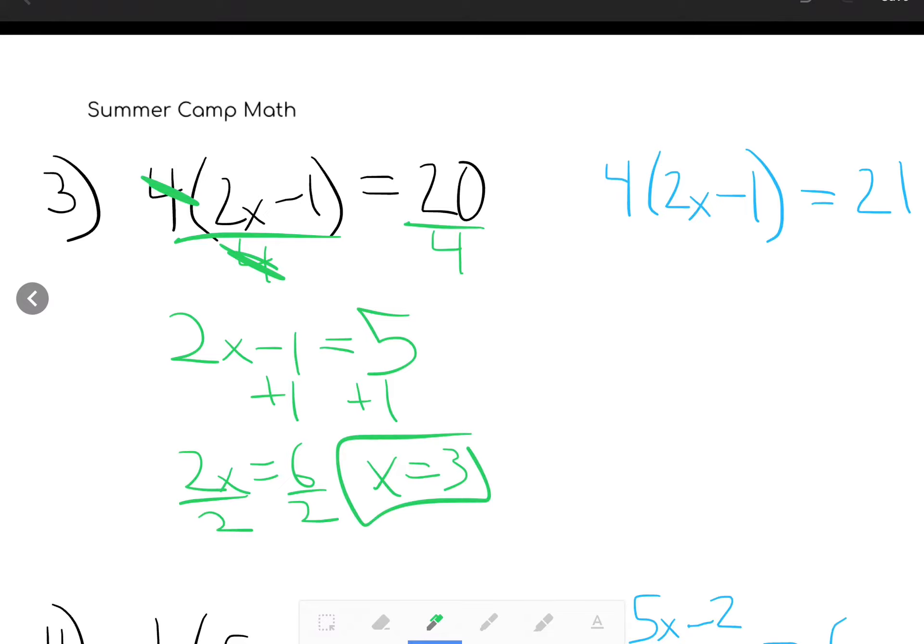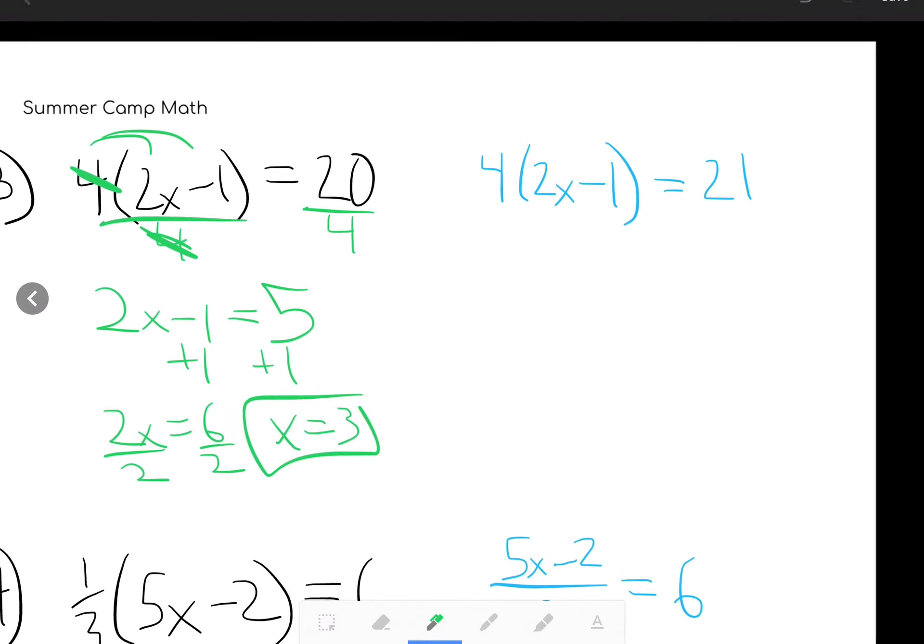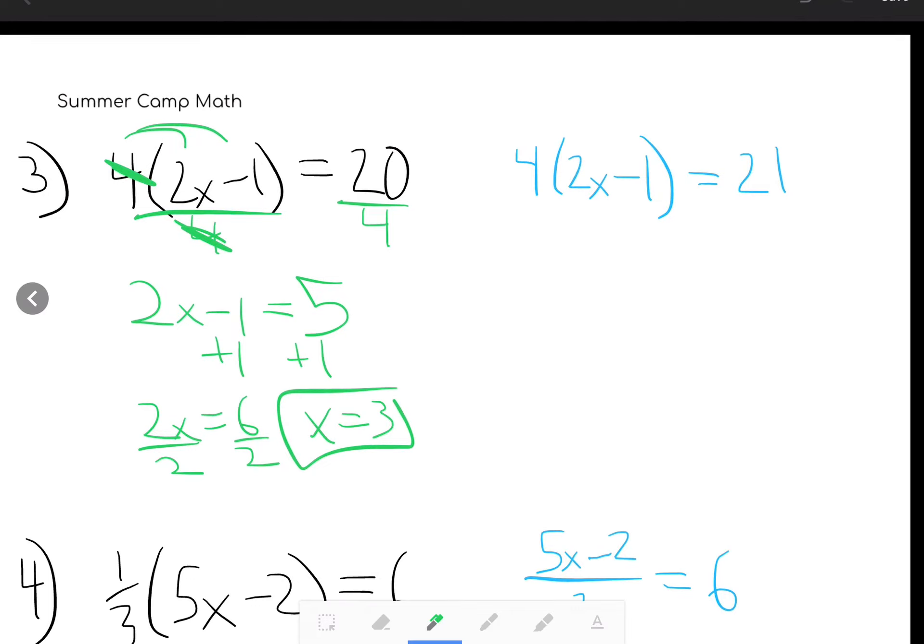Now if you went the longer way, or you distributed, you'd get the exact same answer. It's just that the numbers would be bigger when you're doing your division and addition and subtraction. Totally fine though. Now to contrast that, let's take a look at this problem. Here, I can't really divide by 4 because 21 isn't a nice multiple of 4. So when this is the case, we have to bite the bullet and we just have to distribute. So we distribute.